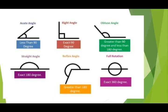There are six types of angles: acute angle, right angle, obtuse angle, straight angle, reflex angle, and full rotation. Acute angle is less than 90 degrees. Right angle is exactly 90 degrees. Obtuse angle is greater than 90 degrees but less than 180 degrees. Straight angle is exactly 180 degrees. Reflex angle is greater than 180 degrees. Full rotation is 360 degrees.